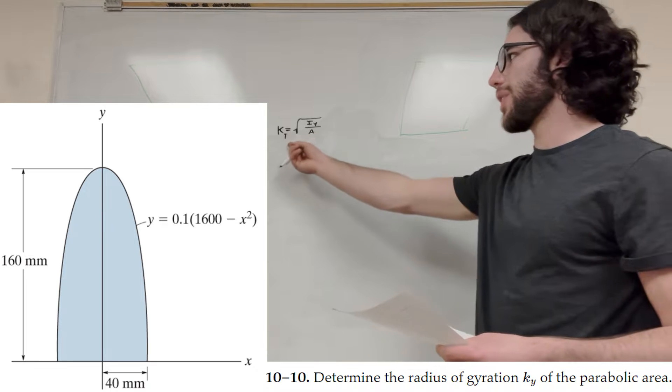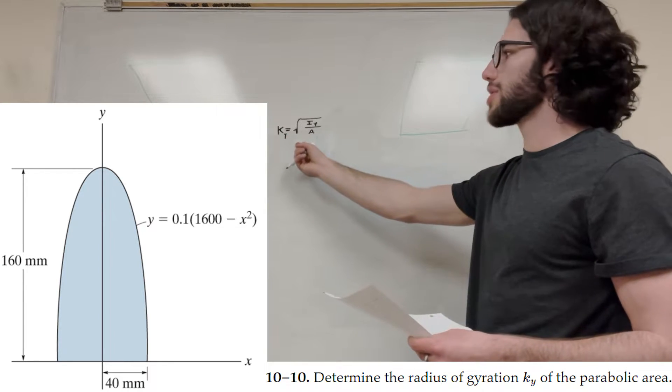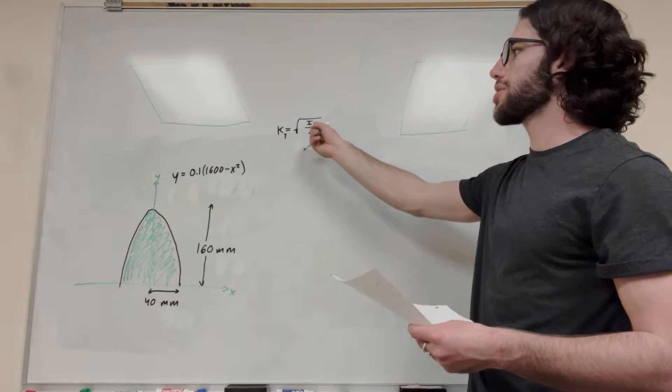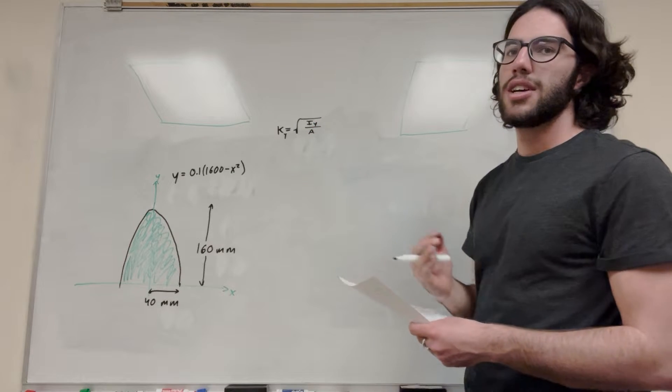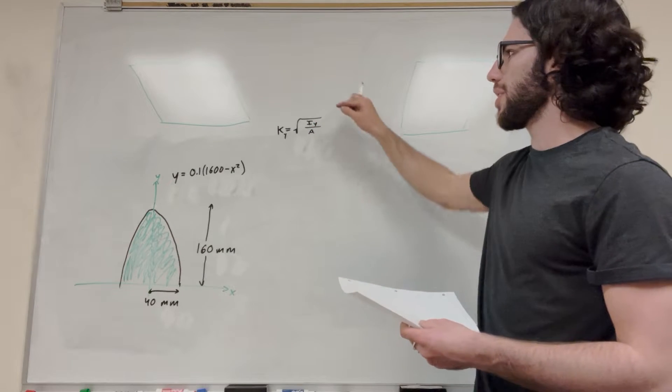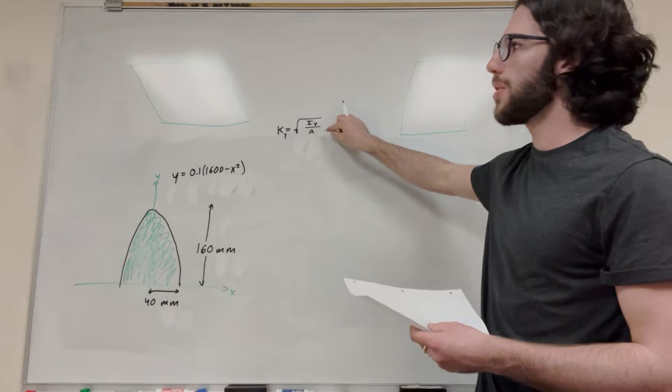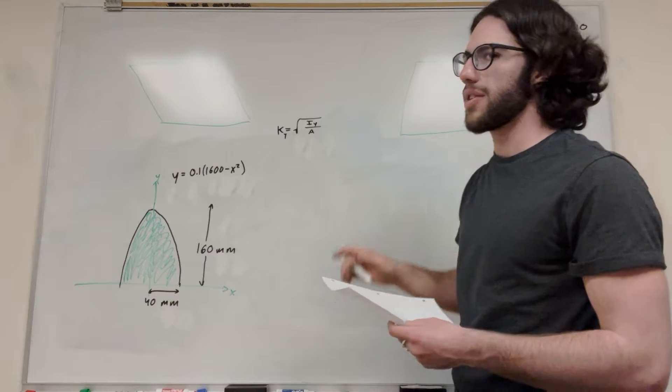So we're going to use this equation. The radius of gyration is equal to the square root of the moment of inertia around the y-axis divided by area. So that means to find the radius of gyration, we're going to need to find this and this. So let's get started with the moment of inertia around the y-axis.